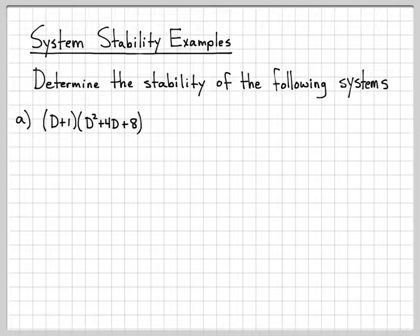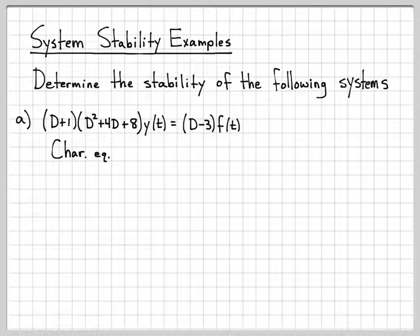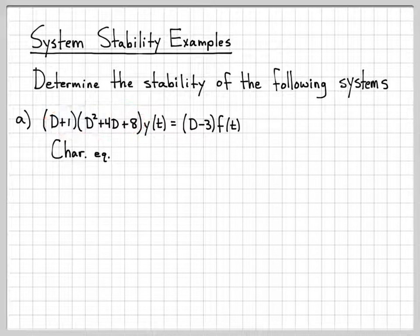So what we're going to do is we're going to find the stability of these systems. So part A, our system is described like this. Here's a differential equation relating the output y of t to the input f of t. What's important for us is the characteristic equation, which we can look at right here. Just replace all the d's with lambdas.